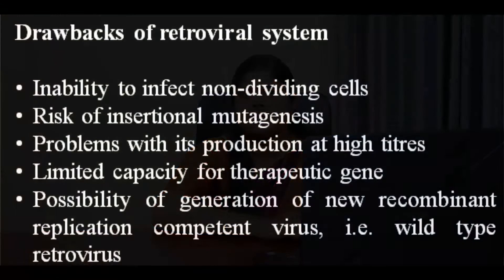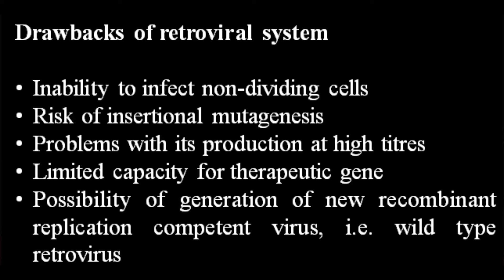There are some drawbacks for the retrovirus system. These include retrovirus inability to transfect non-dividing cells like muscle, brain, lung, and liver cells, and its random integration of its genome with associated risk of insertional mutagenesis, problems with production of high titers, its limited capacity for the therapeutic gene, and the possibility for the generation of new recombinant replication-competent viruses, that is, wild-type retrovirus.